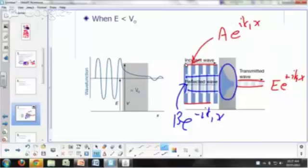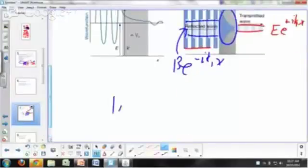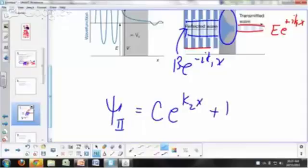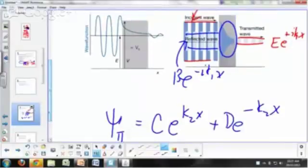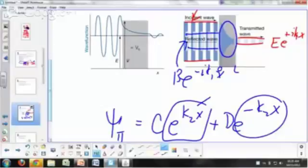Notice that within the barrier, you don't have any oscillations, because look at your functions inside the barrier. What's Ψ2? Ce to the K2X, De to the minus K2X. There's no I there, so that's not going to be a sum of sine and cosine. This is an exponential growth. As X gets bigger, this is going to go to infinity as X approaches infinity, but your X is not going to go to infinity, it's just from zero to L. And then this is an exponential decay. The larger the X, the smaller this number is. So that's what happens to your function inside the barrier.